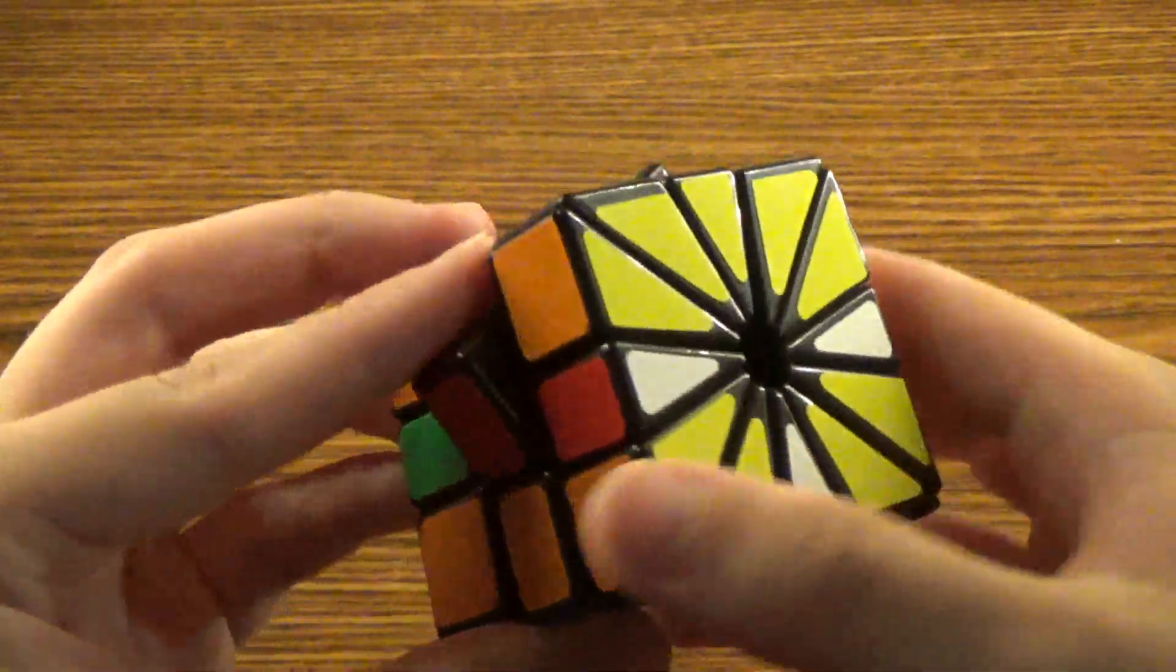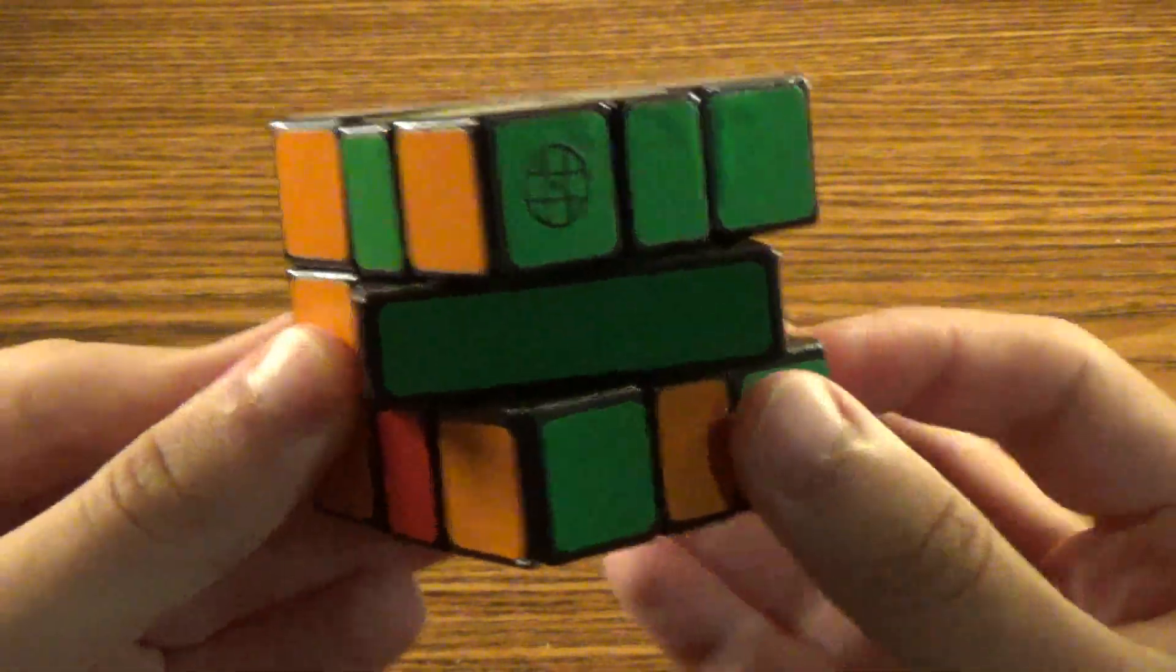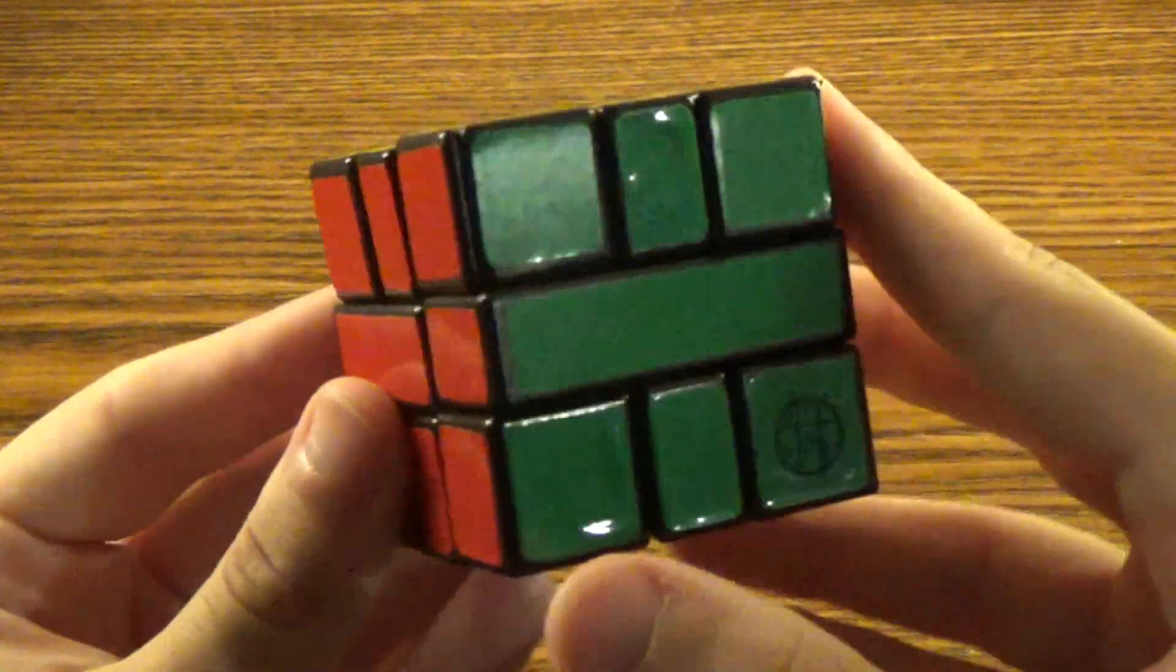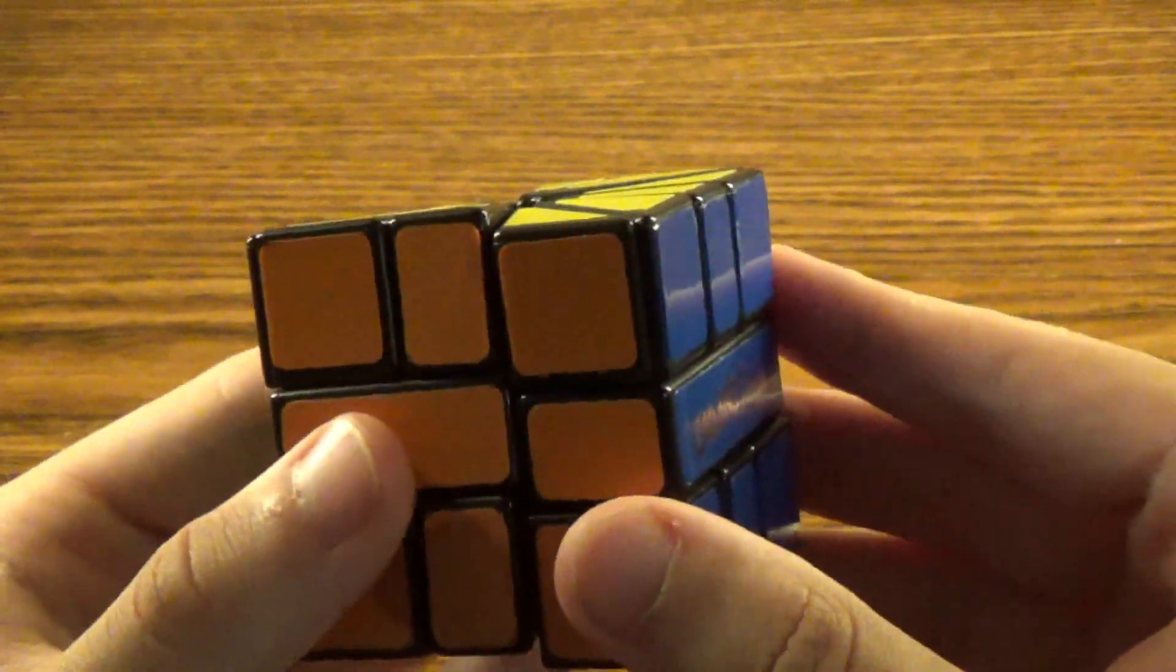There. So now it's a matter of just cycling the edges as you would on a Square-1. And after some edge swapping algorithms, the Square-3 Plus has been solved.